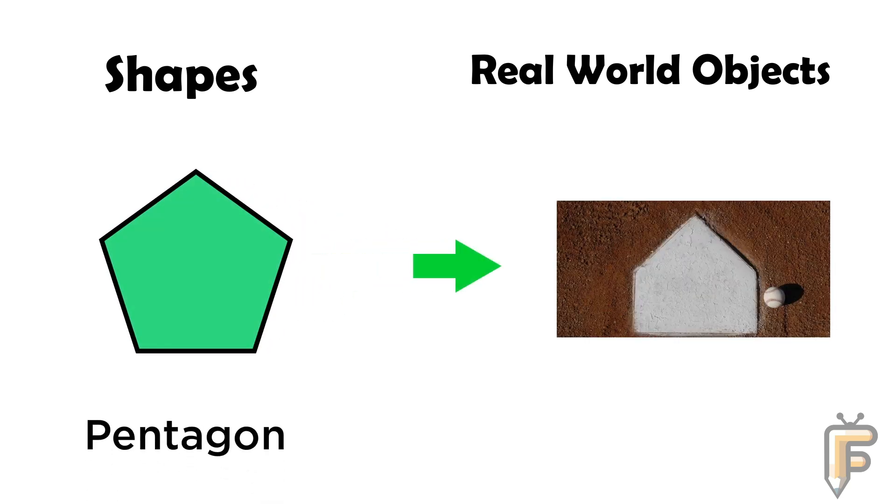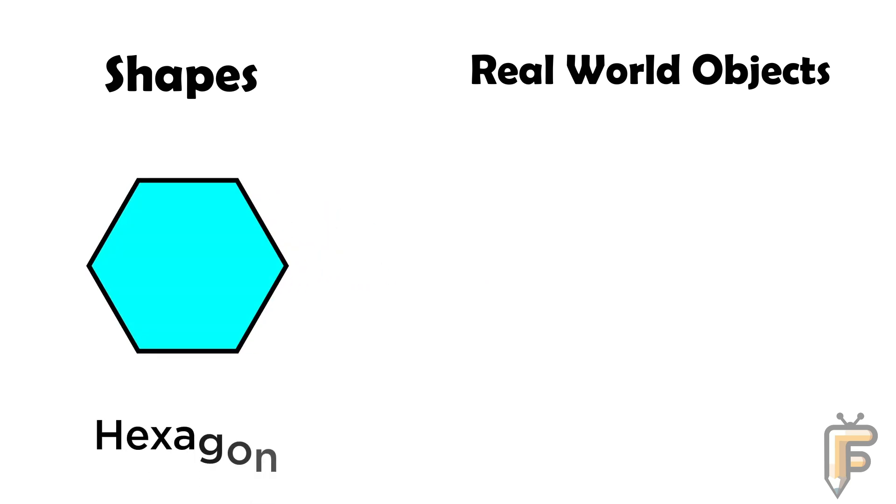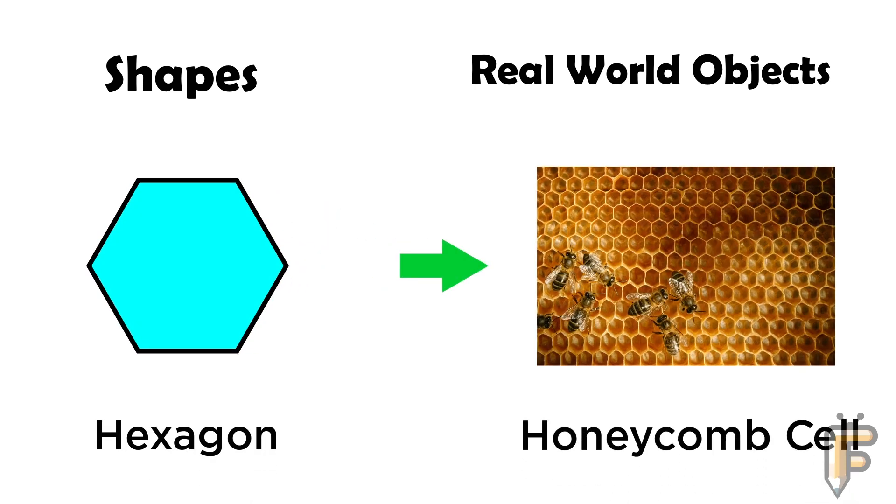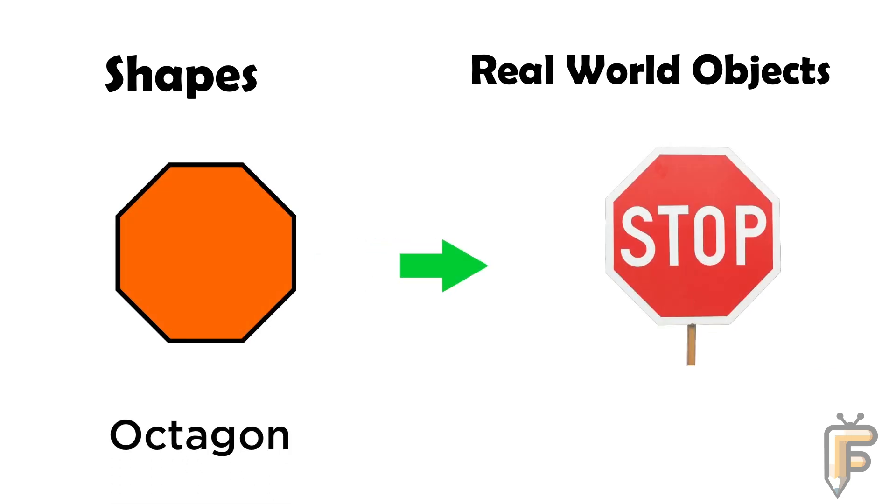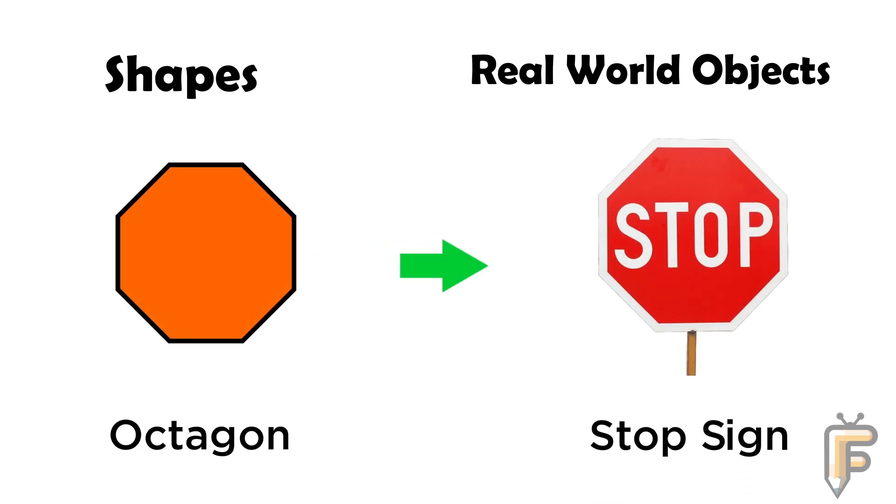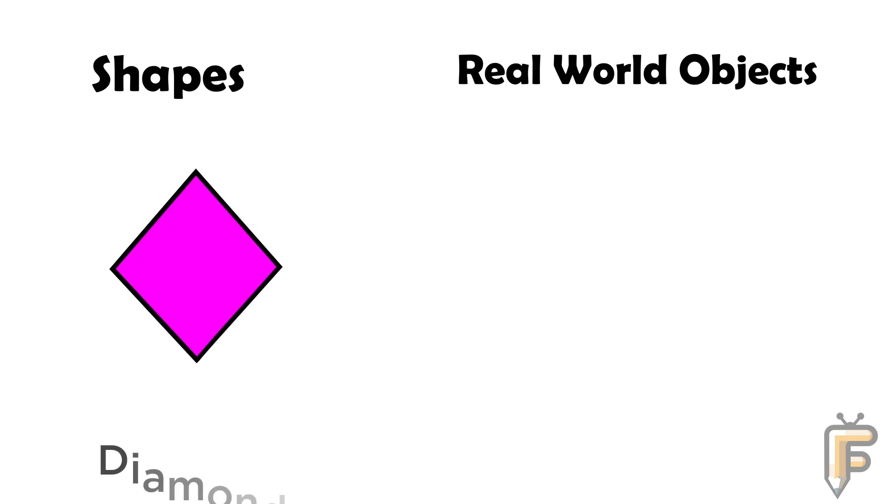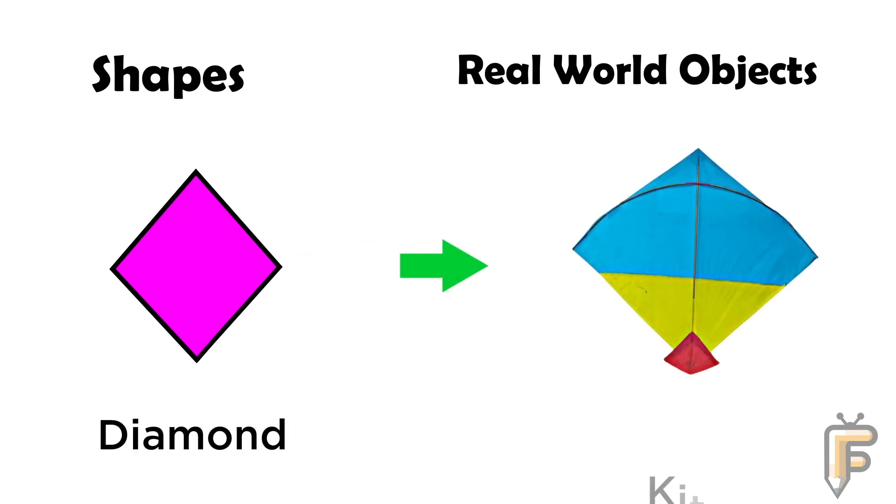Pentagon: home plate in baseball. Hexagon: honeycomb cell is hexagon shape. Octagon: stop sign is octagon shape. Diamond: kite is diamond shape.